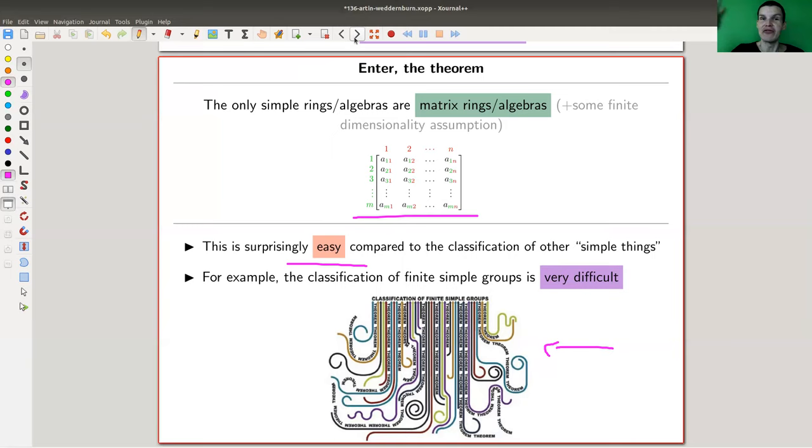So what are the easiest rings? Matrices. And that's a really beautiful theorem, in my opinion, because matrices are the most important algebraic object ever. Matrices just appear everywhere. And here's another reason why they do. It's the simplest of this kind.